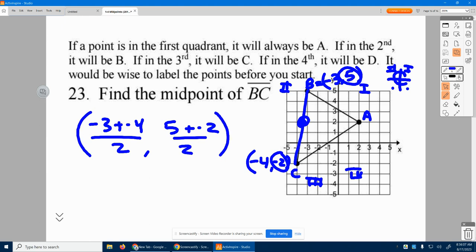Negative three plus negative four is negative seven, divided by two is negative three and a half. Five plus negative two is three, divided by two, negative one and a half.